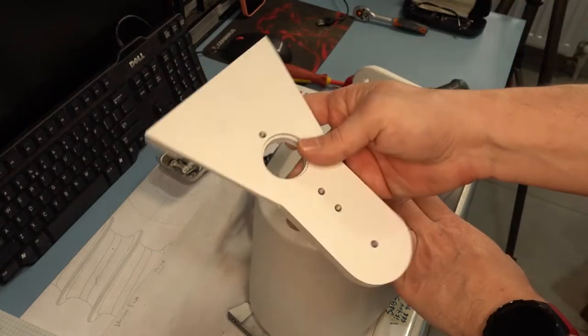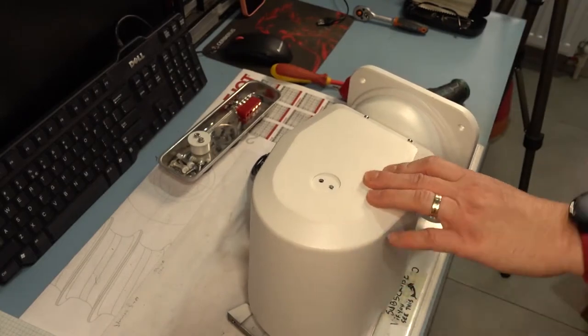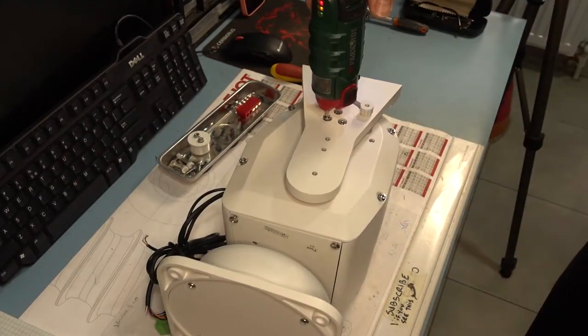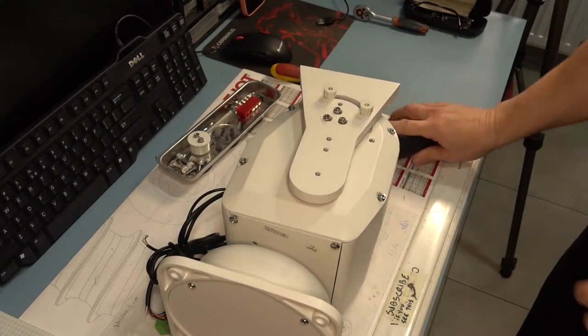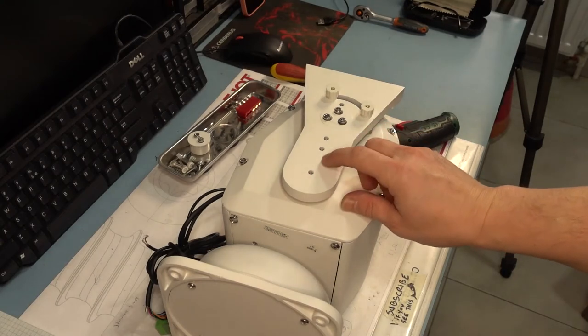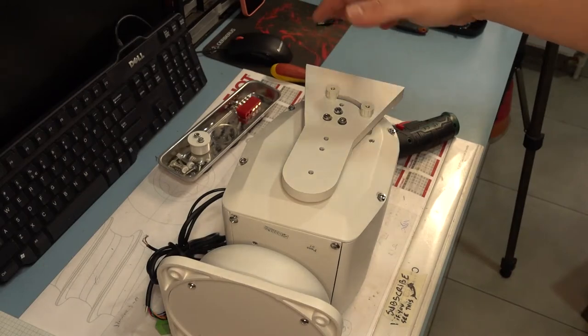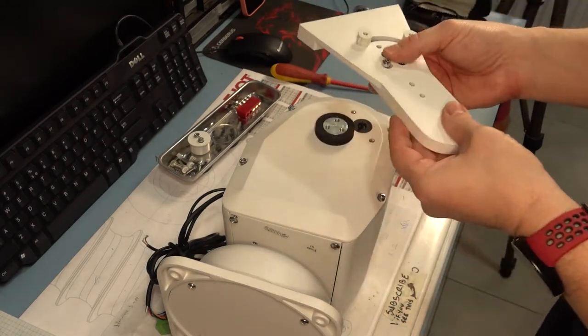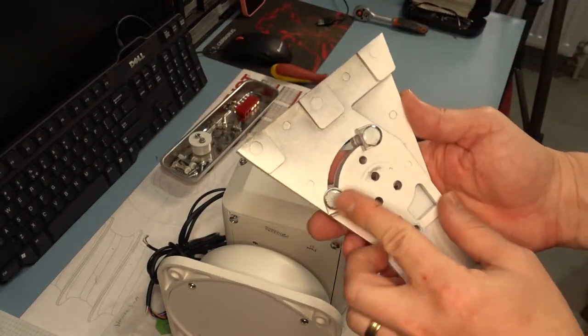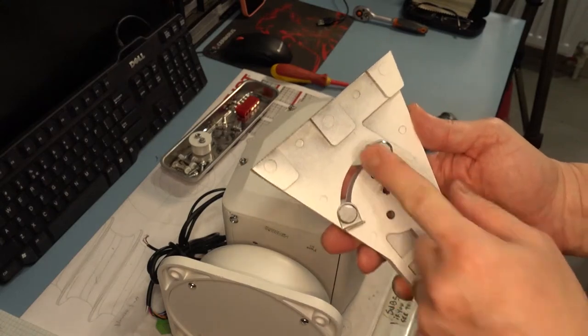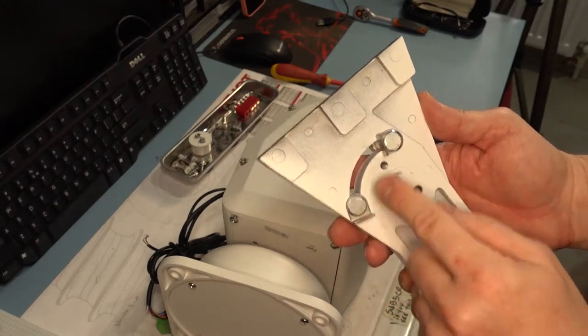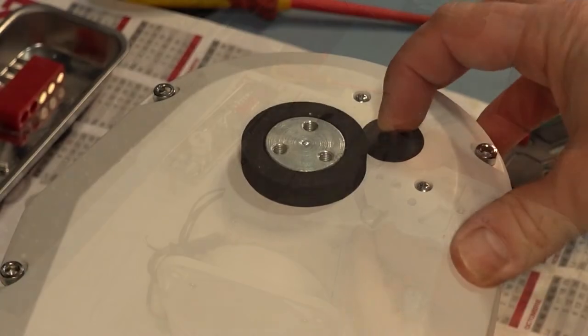This is one leg. These are threaded holes where you can attach a counter weight if the camera mount on top of this is too heavy to balance the weight. And these are the end of turn limit cams which trigger this switch over here.